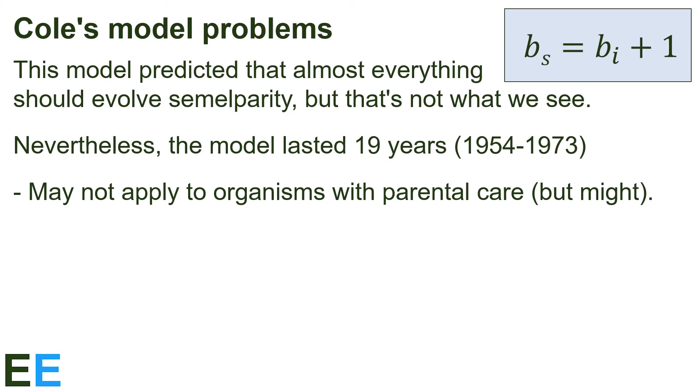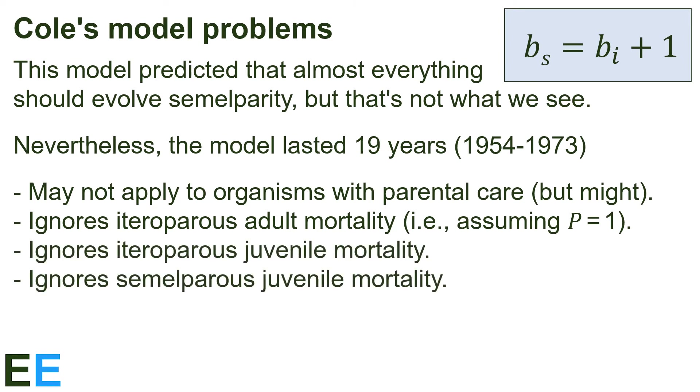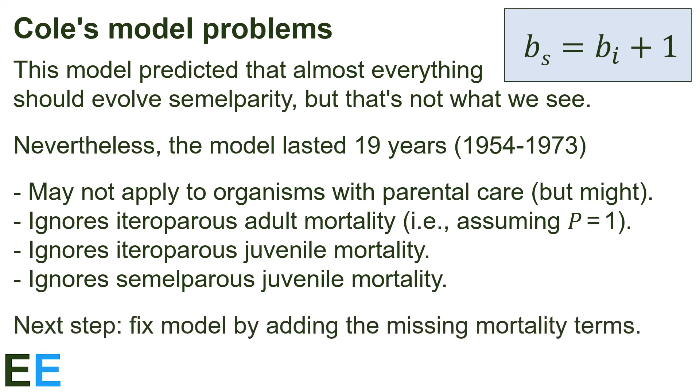More importantly, the model is ignoring some mathematical terms it should have. This model ignores iteroparous adult mortality. That is, we set P to equal 1, which assumes that every adult survives. This isn't realistic for many species. This model ignores both iteroparous and semelparous juvenile mortality. The model includes births, but not how many of the young make it to adulthood and their own reproduction. This brings us to the next step, fixing the model by adding the missing mortality terms.